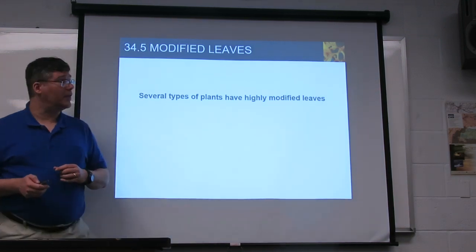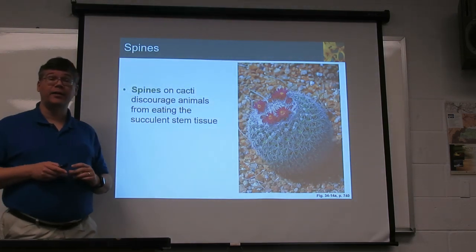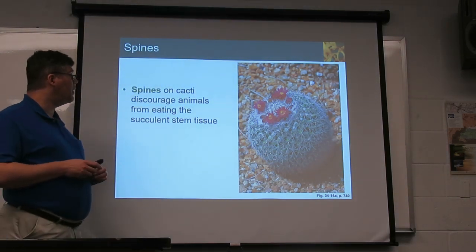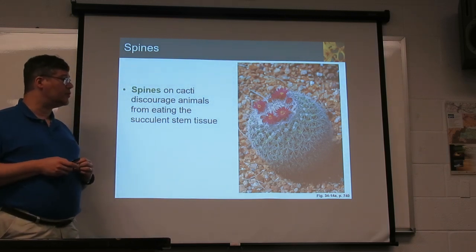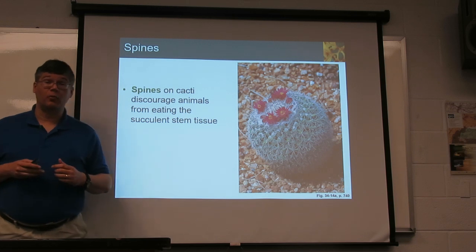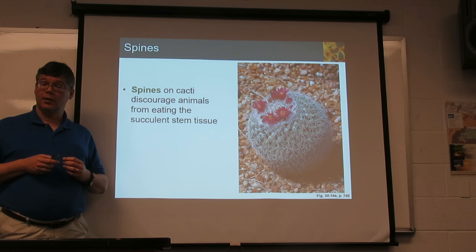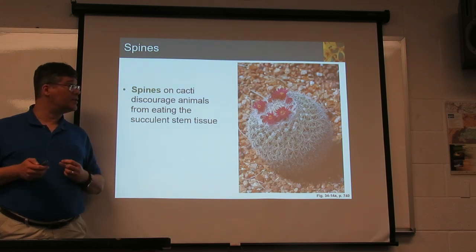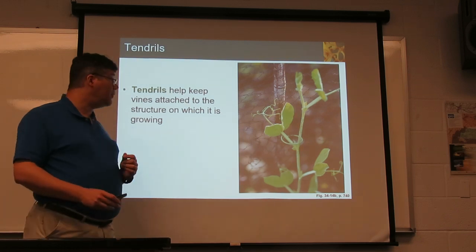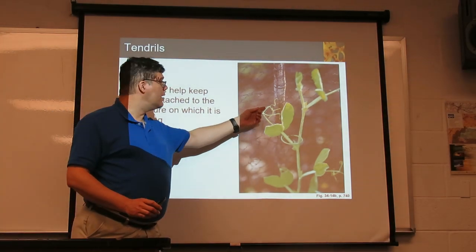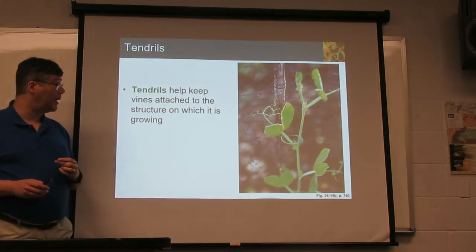There are other things leaves can do. True spines, like on a cactus, are actually highly modified leaves protecting the plant. Cactus typically live in dry areas with a lot of water stored in the stem; they don't want an animal coming along and eating them, so those spines provide protection. Another modified leaf type is the tendril, found on vines — a thin bit that can wrap around something and help hold the plant in place.